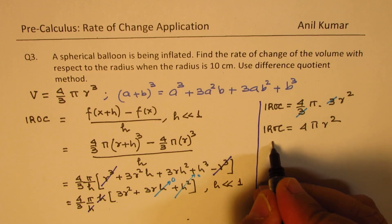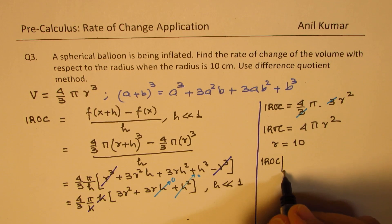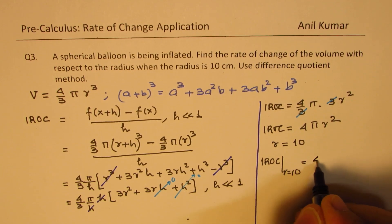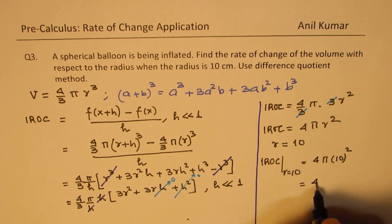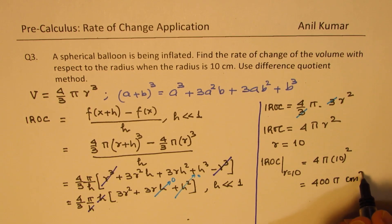Now we need to find this at r equals 10. So we can say instantaneous rate of change at r equals 10 will be 4 pi times 10 square or equals 400 pi centimeters square.